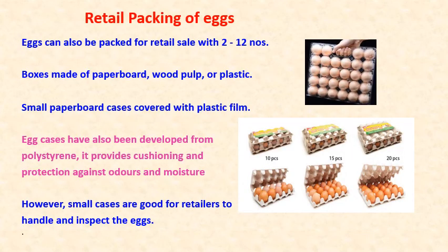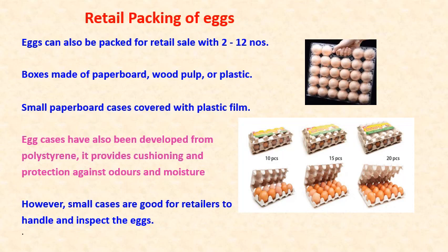Regarding retail packing of eggs: eggs can be packed for retail sale with 2 to 12 numbers. Boxes made of paperboard, wood pulp, or plastic are used for this purpose. Small paperboard cases covered with plastic film are also used. Egg cases have also been developed from polystyrene, which provides cushioning and protection against odors and moisture. Small cases are good for retailers to handle and inspect the eggs.